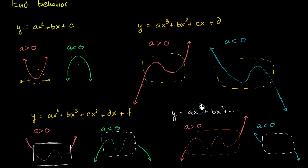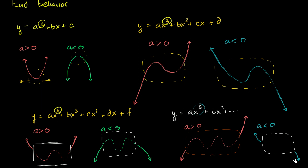The big takeaway here: when we're talking about end behavior, if you're looking at an even degree polynomial, it's going to have end behavior like a second degree polynomial — what happens at really negative and really positive values of x is very similar. And if your degree is odd, you're going to have very similar end behavior to a third degree polynomial. You might do all sorts of craziness in the middle, but for a given a — whether it's greater than or less than zero — you will have predictable end behavior.